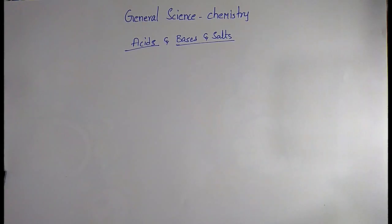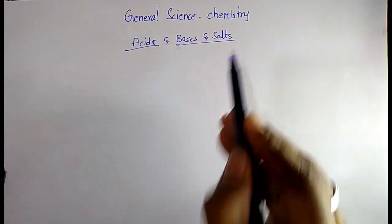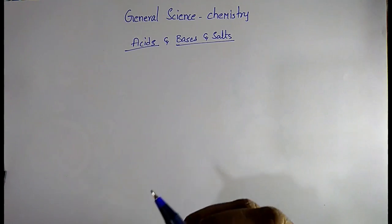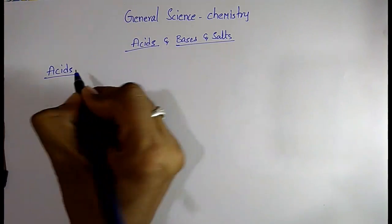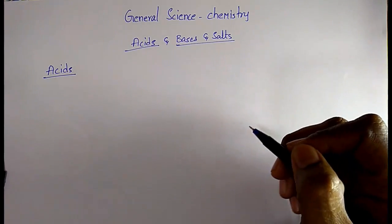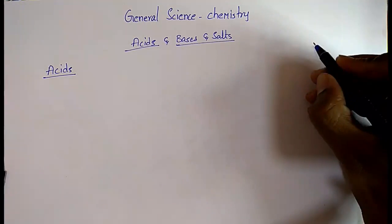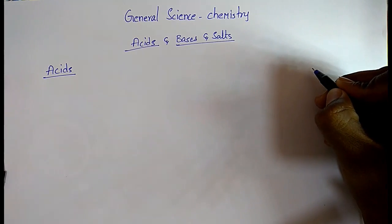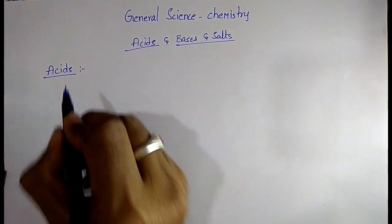Hi friends, welcome to Sunil Engineering Academy. I am Sunil. In chemistry we have completed two topics: atomic structure and fuels and combustion. The next topic is acids, bases and salts. In this class I am going to teach this topic. If you want physics class 1 to class 18 PDF notes, I have put a link in the description box — click on that and get the PDF.